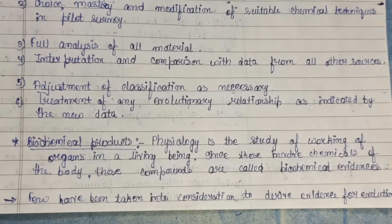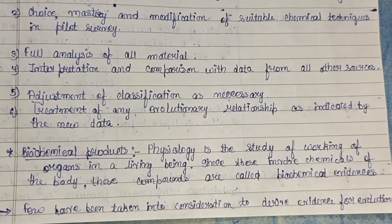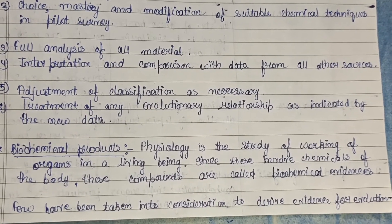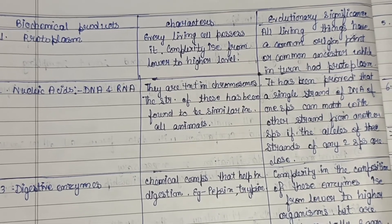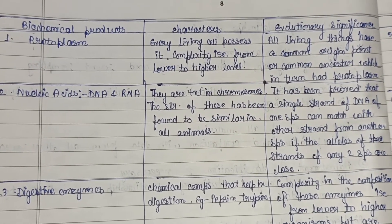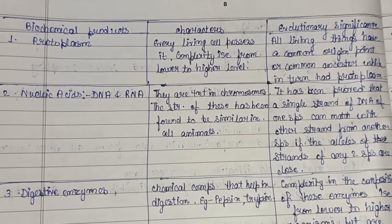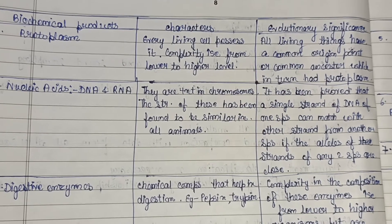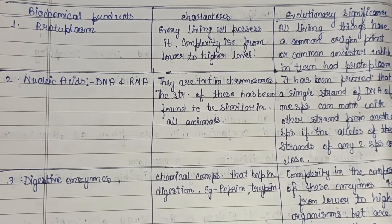Regarding biochemical products: physiology is the study of the working of organs in a living being. Since these involve chemicals of the body, these compounds are called biochemical evidences or biochemical products. A table classifies all biochemical products with their characteristics and evolutionary significance. Protoplasm — every living cell possesses protoplasm, and its complexity increases from lower to higher levels, from a single-celled amoeba to multicellular vertebrates. Its evolutionary significance is that all living things share a common origin and ancestor.